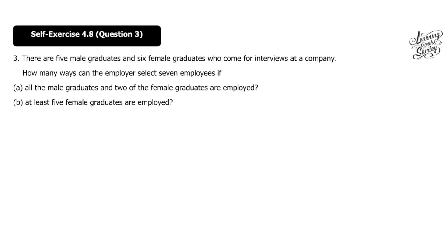Let's look at question number 3. There are 5 male graduates and 6 female graduates who come for interviews at a company. How many ways can the employer select 7 employees if all the male graduates and 2 of the female graduates are employed? So here, we have 5 male and 6 female. And total, we need to select 7 employees.